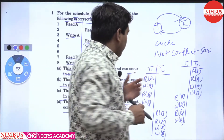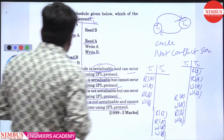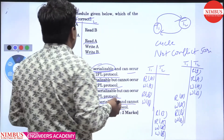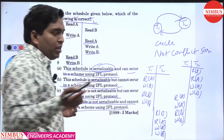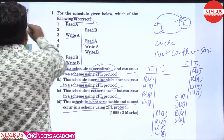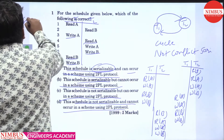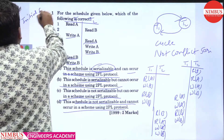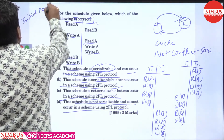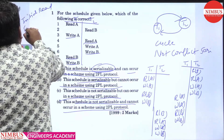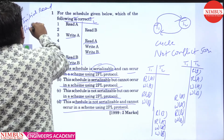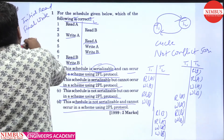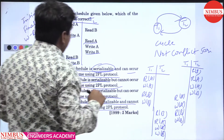If it is not conflict serializable, then it may or may not be view serializable. For that you have to check the view serializability conditions. There are three conditions: first, the initial read on each data item must be the same; second, the final write on each data item must be the same; and third, the write-read sequence must match.